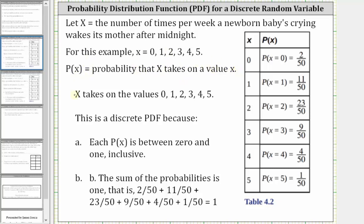The random variable x takes on the values of zero, one, two, three, four, and five shown here in the first column. The probability that x is equal to zero, meaning the newborn baby's crying never woke the mother up in the week, is equal to 2/50ths. The probability that x equals one is 11/50ths, x equals two is 23/50ths, and so on. This is a discrete probability distribution function because each probability is between zero and one, including zero and one, and because the sum of the probabilities is equal to one.